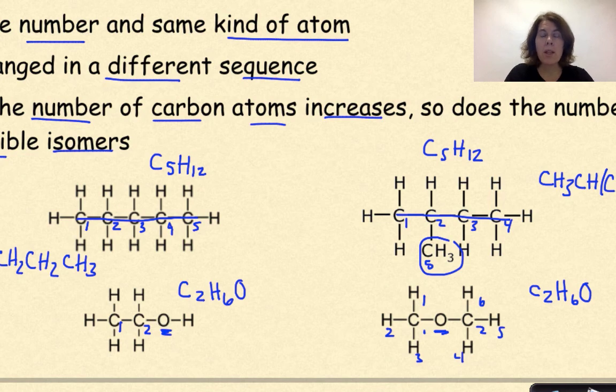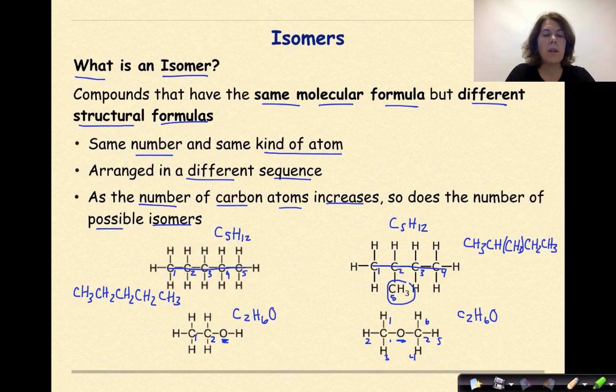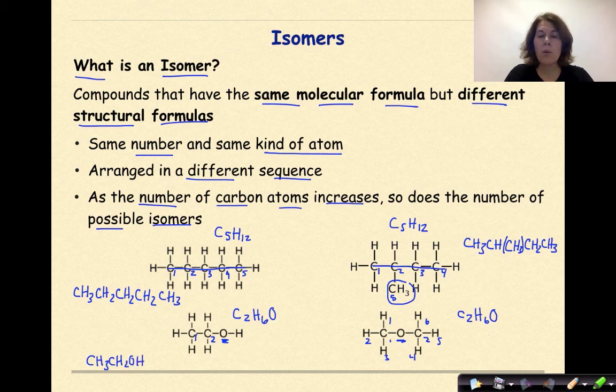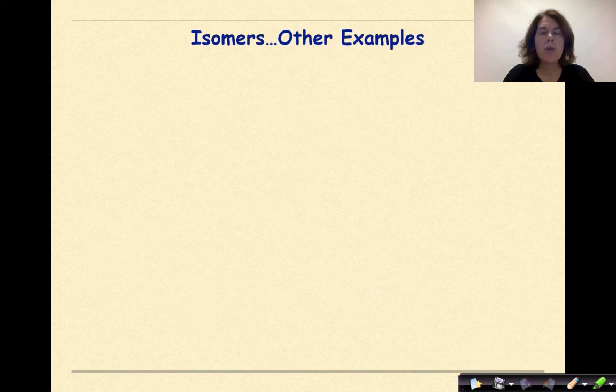So if we look at these molecular formulas, we can see that they are exactly the same, but these molecules are very different. What you're going to learn is that one is an alcohol and the other one is an ether. So if I was to write out the condensed structural formula of the one on the left, it would be CH3CH2OH, and the one on the right would be CH3OCH3. Again, they have the same molecular formula, but definitely different structural formulas.